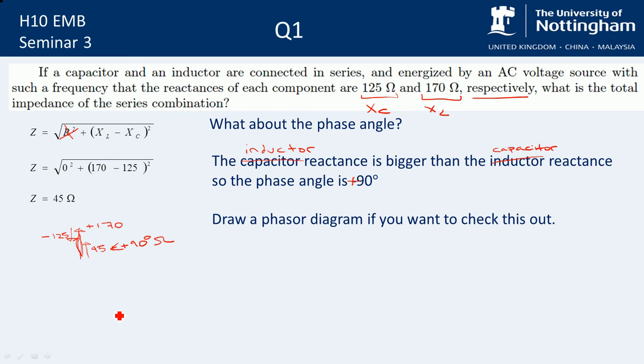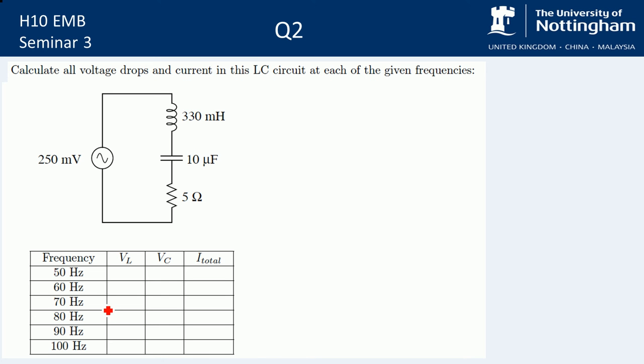It's a bit of an odd phasor diagram because it's not a triangle, but it does make our lives easier. Next up, question two: we're going to calculate all the voltage drops and the current in this LC circuit at each of the given frequencies. I'm going to go through how we solve for 50 hertz, and then it's just rinse and repeat for all the different frequencies.